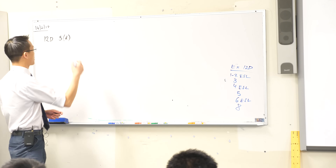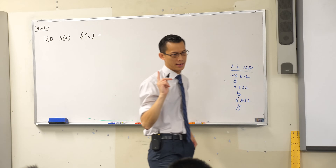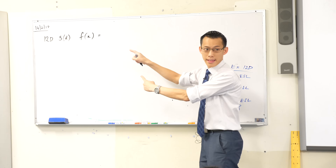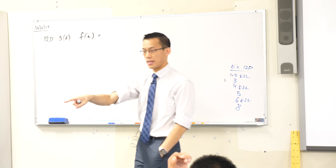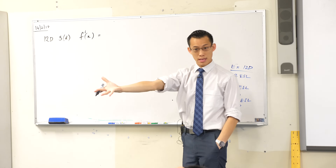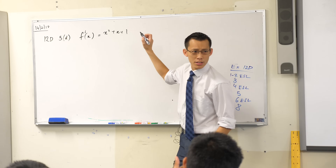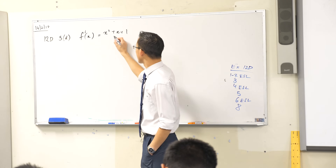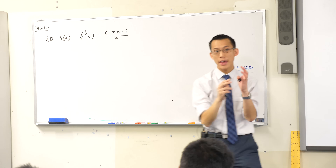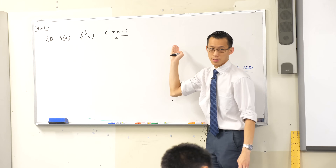So we have this f of x, and the question is to find what f of x is. They give us information around f of x which will enable us to get there. The first piece of information is a derivative — f dash is equal to x squared plus x plus one, divided by x. So the derivative of f, using my notation, is this fraction.